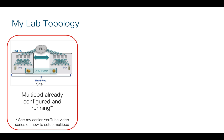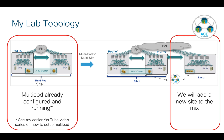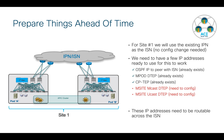Let's take a quick look at my lab topology. Site number one consists of two pods - I've already got multipod up and running and configured. I'm not going to show that here, but if you're interested, I'd refer you to my earlier video series on the matter. We're going to be adding site number two into the mix and introducing the MSO, doing configurations across both sites.